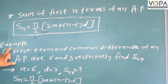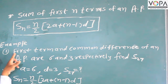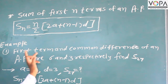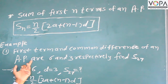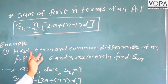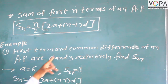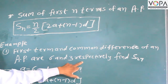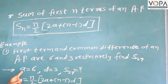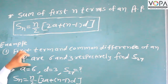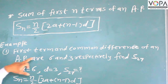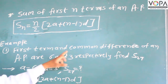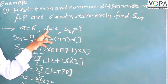In this example, the first term of the sequence and the common difference are given. The AP is 6, meaning the first term of the sequence is 6, and the common difference is 3. Therefore, a is equal to 6 and d is equal to 3.